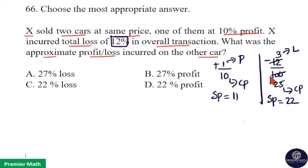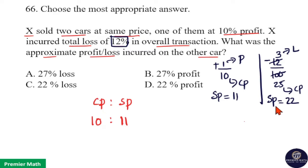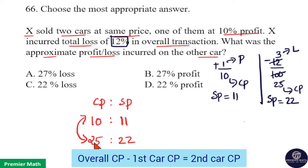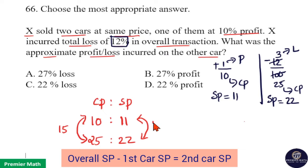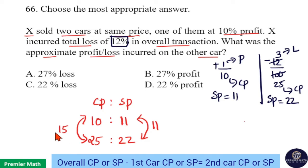Now take the ratio between cost price and sell price. Cost price of the first car is 11 parts and sell price is also 11 parts. The overall transaction cost price is 25 parts and sell price is 22 parts. Taking the difference in cost price: 25 minus 10 equals 15 parts. Taking the difference in sell price: 22 minus 11 equals 11 parts. So cost price of the second car is 15 parts and sell price is 11 parts.